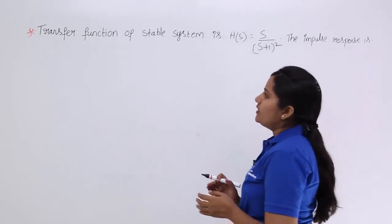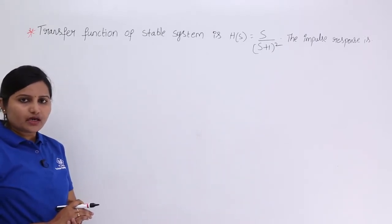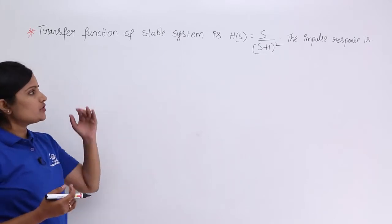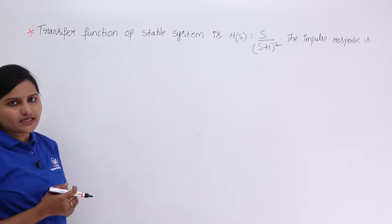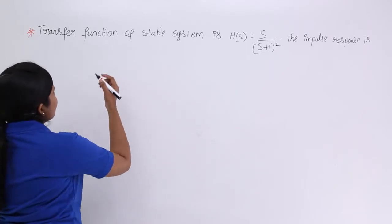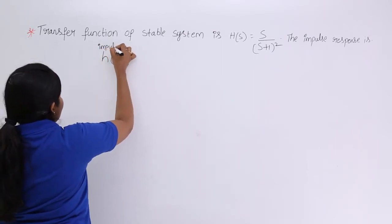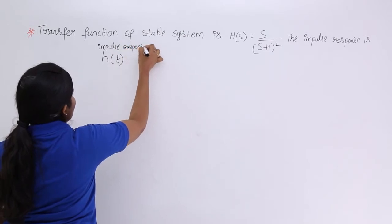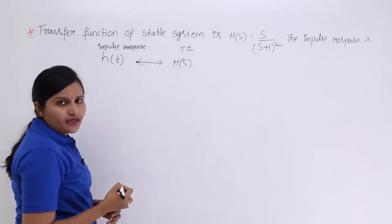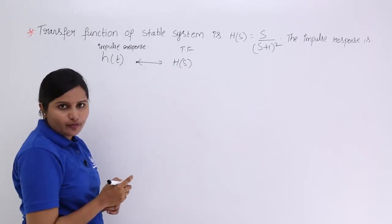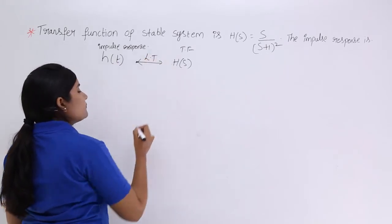The impulse response is derived from the given transfer function of the system. The transfer function of the system is nothing but the output transform divided by the input transform. That transfer function is also called the Laplace transform or Fourier transform of the impulse response. From the knowledge of LTI systems, the impulse response h(t) and transfer function H(s) are a transform pair. In the case of Fourier transforms, this can be treated as H(ω) or H(f).